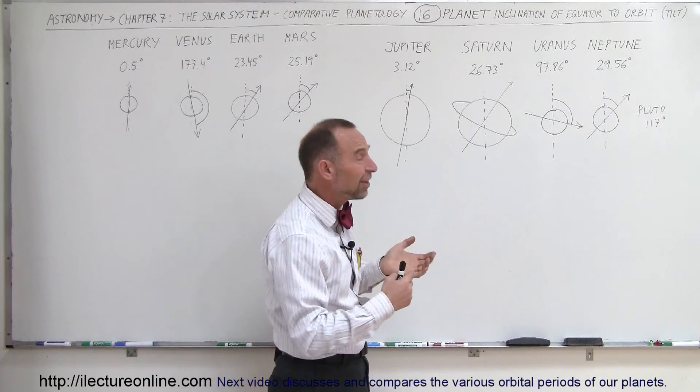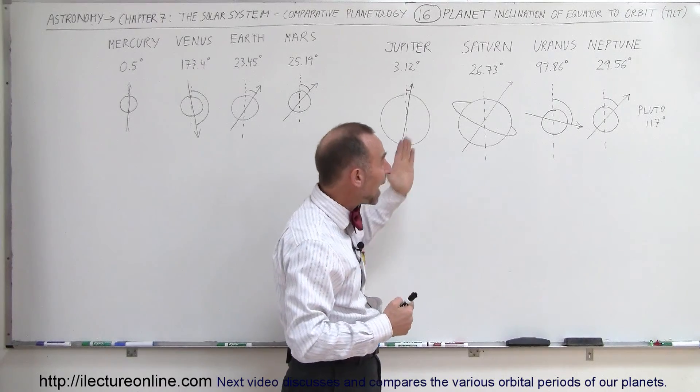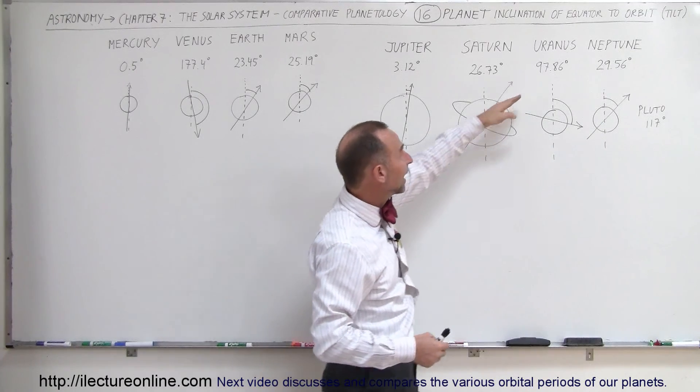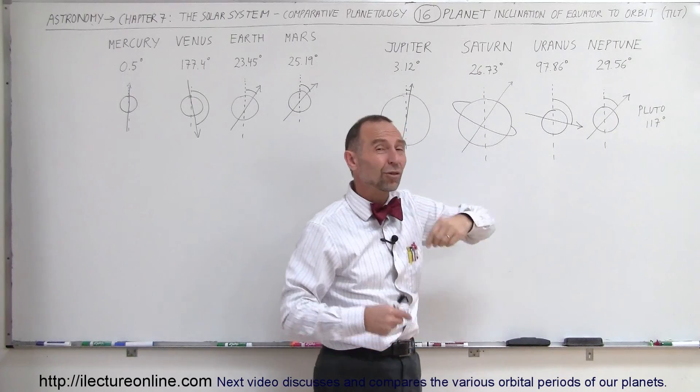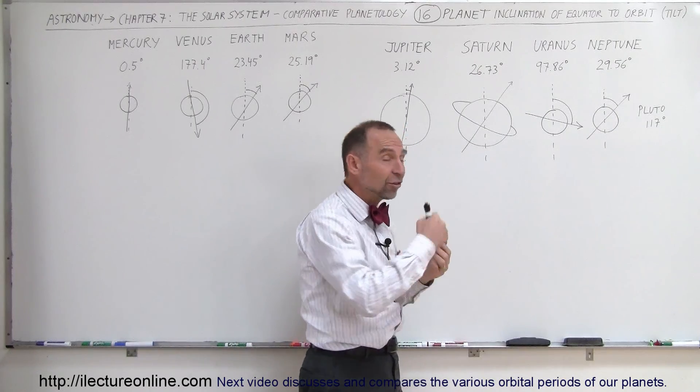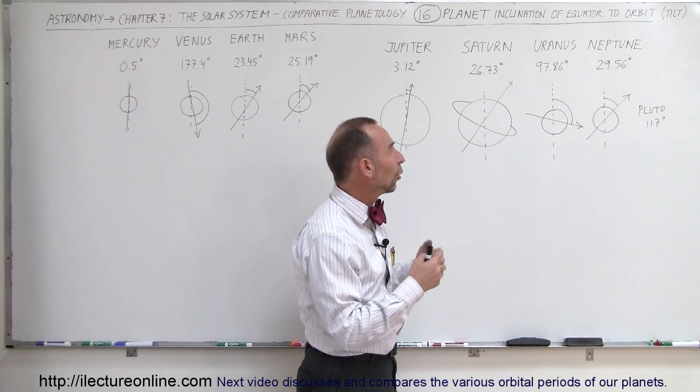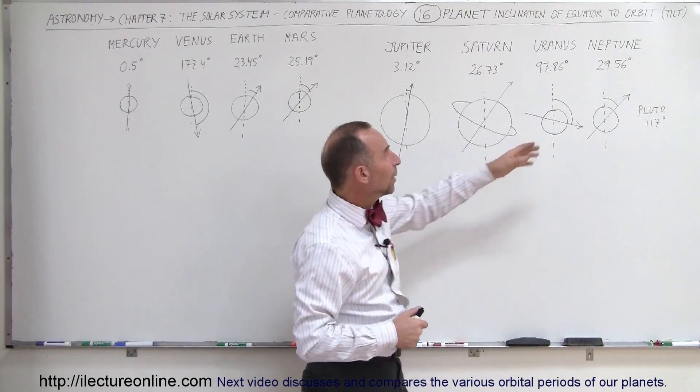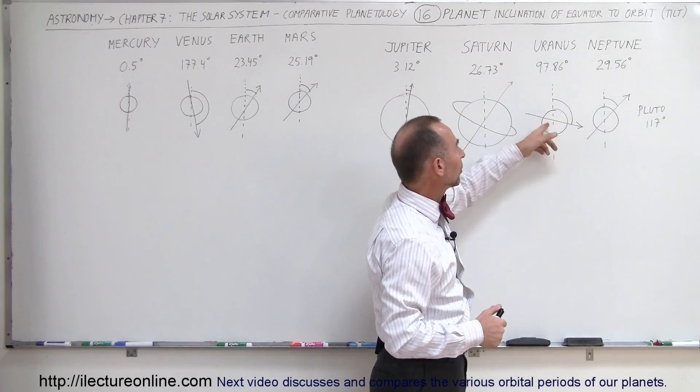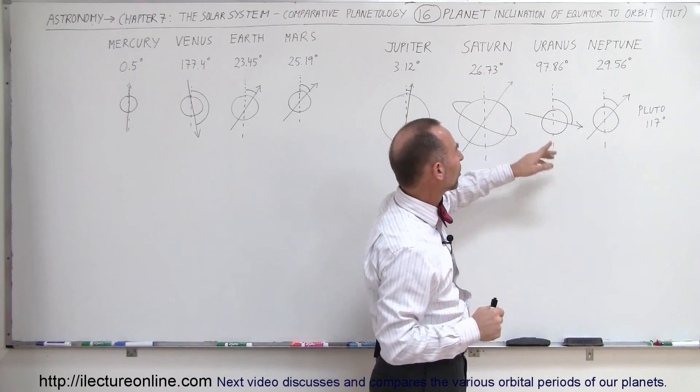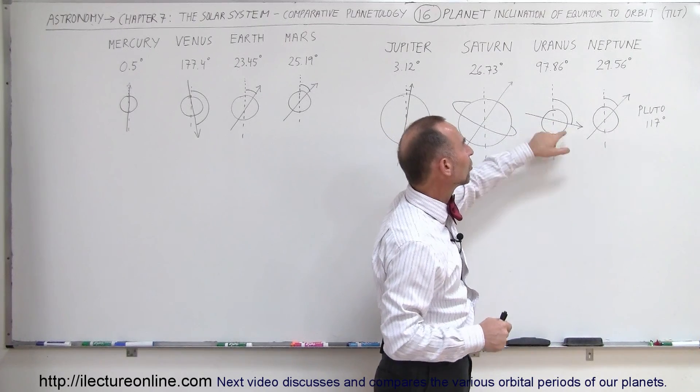And Uranus, just like Venus, has a very strange tilt. It's past 90 degrees—97, almost 98 degrees. So technically, Uranus is also upside down and it has what we call a retrograde rotational spin. I should say rotational spin instead of orbital spin.